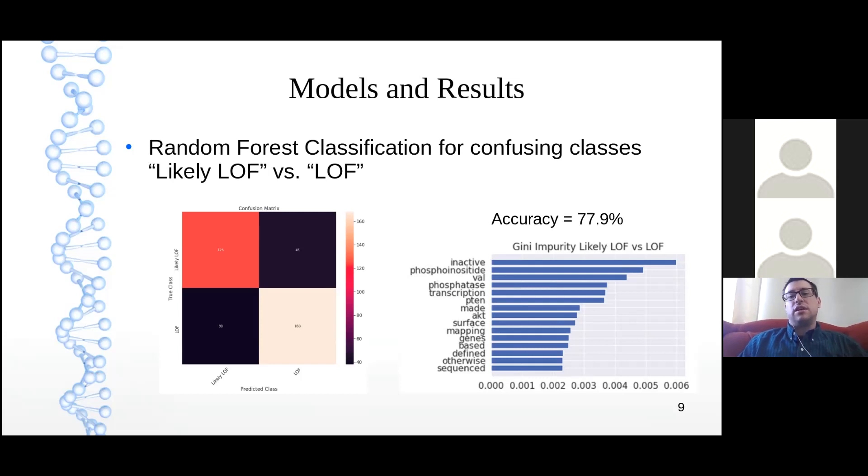Over on the right, we see the most important words for this model. One is the word inactive is on top. When we have a loss of function mutation, what that means is that the protein that codes from that gene can no longer perform its function. So hence loss of function. That makes that gene inactive. Seeing that word there at the top is very encouraging for this model. The other thing I want to point out is P10, the sixth word there. That's not a typo, that's actually a gene. That is a known tumor suppressor gene. When that gets knocked out or mutated, that's been associated with several forms of cancer, including glioblastoma, lung cancer, breast cancer, and prostate cancer.